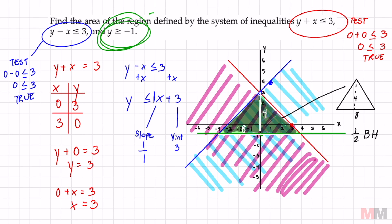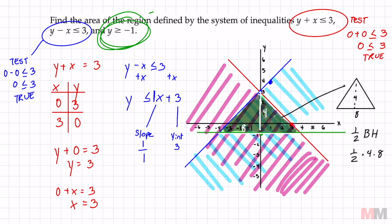It has a height of four and a base of eight so that's just one half base times height. It's the formula for a triangle that's going to get you one half times four times eight and the area to answer this question is going to be 16.